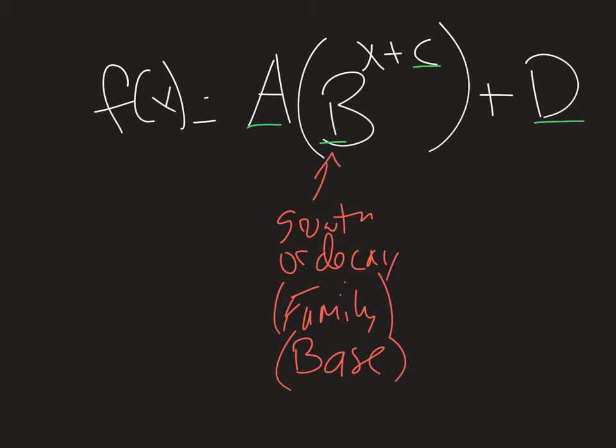A is going to dictate steepness. And if A is negative, so if it's less than 0, it's going to reflect over the x-axis.